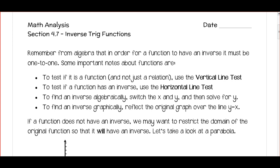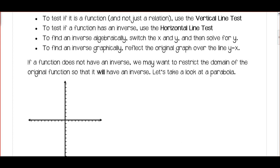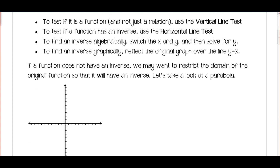We draw a horizontal line, and if it goes through the curve in more than one spot, then it does not have an inverse. Every function will have a relation when we switch the x and y values — that's basically what we're doing when we find an inverse — but that won't always be a function. Algebraically, we switch the x and the y values and then re-solve for y. To find the inverse graphically, we reflect the original graph over the line y equals x.